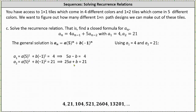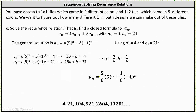Solving the system of equations, we get a equals five sixths and b equals one sixth. Substituting these values into the general solution gives us a sub n equals five sixths times five to the nth power plus one sixth times negative one to the nth power. This is the solution to the recurrence relation. You may want to pause the video and verify this generates the terms of the given sequence.